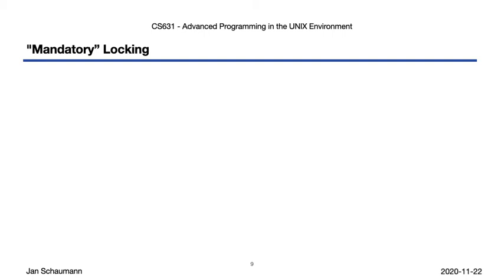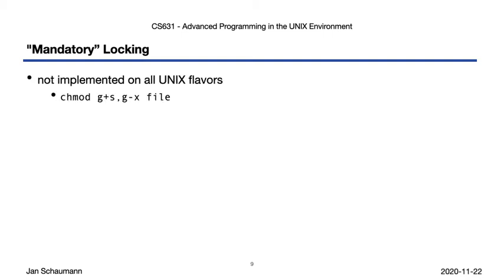So why don't we implement mandatory record locking? To some degree, some Unix versions implement mandatory locking by overloading group permissions. If you change a file to be setgid but without group execute permissions, and if your OS and filesystem support mandatory file locking, then this signals to the kernel to deny reads or writes by any process on a file that another process has a lock on. However, the implementation is subject to a few subtle race conditions, which is why even though this feature may be available, it is generally advised against relying on it.